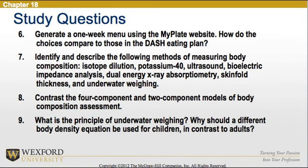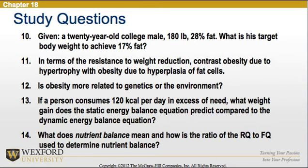Question 8: Contrast the four-component and two-component models of body composition assessment. Question 9: What is the principle of underwater weighing, and why should a different body density equation be used for children in contrast to adults? Question 10: Given a 20-year-old college male at 180 pounds and 28% body fat, what is the target body weight to achieve 17% body fat? Question 11: In terms of resistance to weight reduction, contrast obesity due to hypertrophy with obesity due to hyperplasia of fat cells. Question 12: Is obesity more related to genetics or the environment? Question 13: If a person consumes 120 kcal per day in excess of need, what weight gain does the static energy balance equation predict compared to the dynamic energy balance equation?